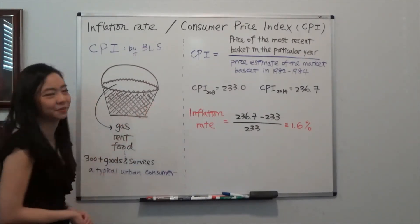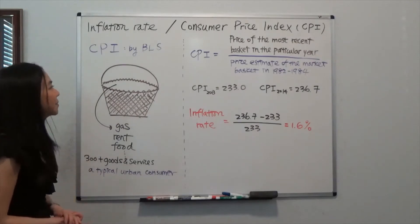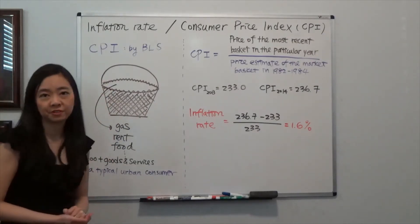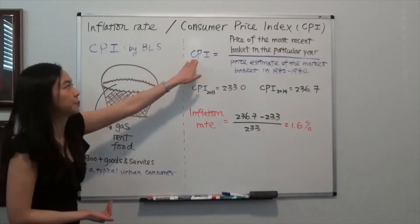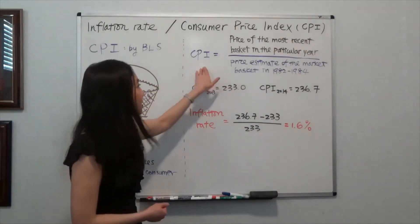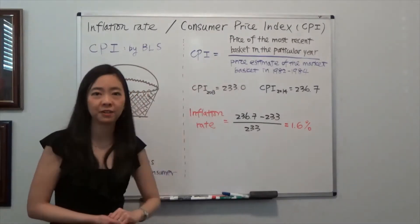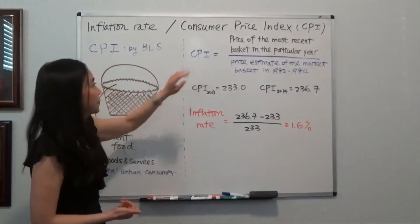So this is a large basket, they have 300 goods in there. And the Bureau of Labor Statistics is going to calculate the price of this basket, and then they are going to prepare the Consumer Price Index. So this is how the Bureau of Labor Statistics prepared CPI.